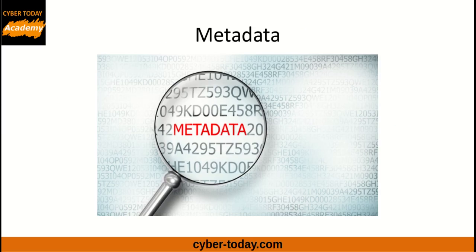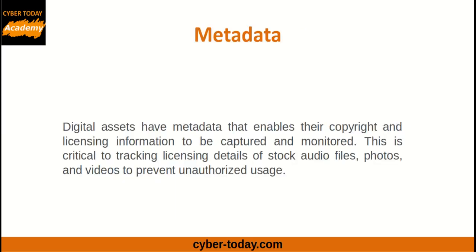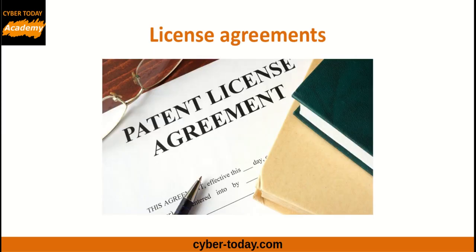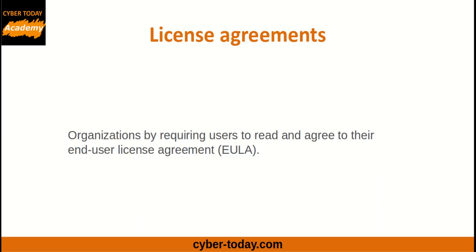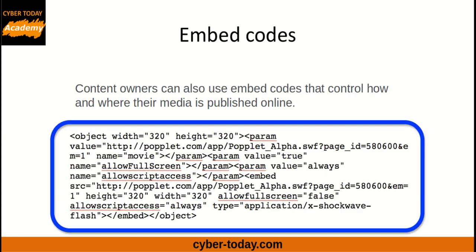Metadata: digital assets have metadata that enables their copyright and licensing information to be captured and monitored. This is critical to tracking licensing details of stock audio files, photos, and videos to prevent unauthorized usage. License agreements: organizations can require users to read and agree to their end-user license agreement, EULA. Embed codes: content owners can also use embed codes that control how and where their media is published online.